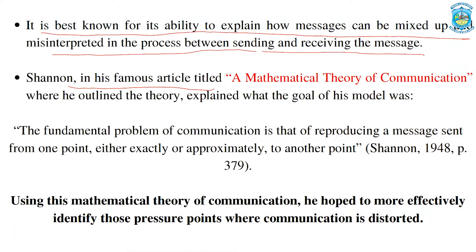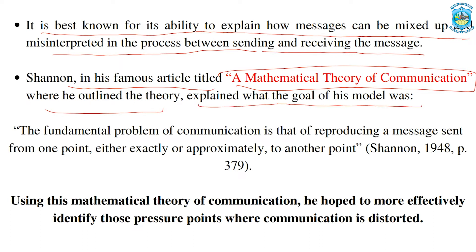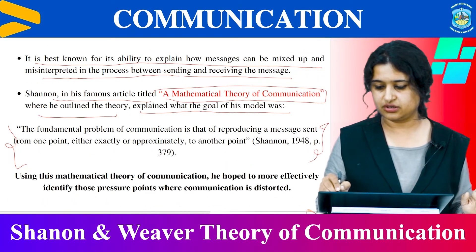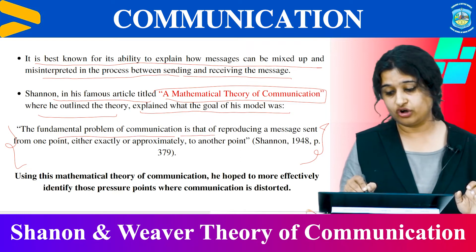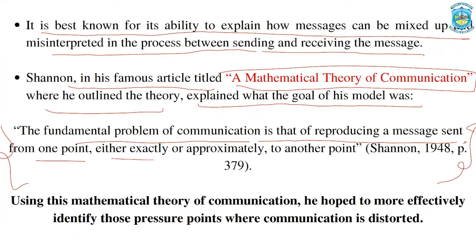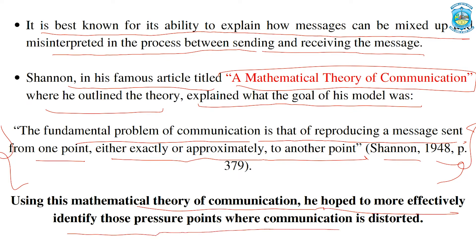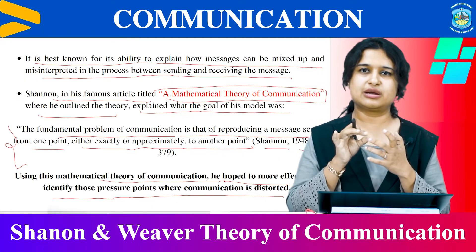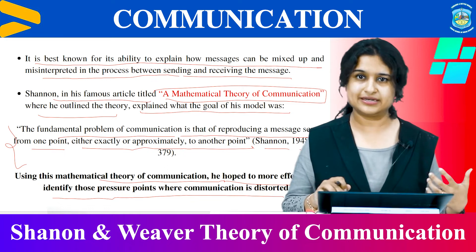Shannon, in his famous article called 'A Mathematical Theory of Communication,' outlined the theory and explained its goal. I want to quote these lines from the book: 'The fundamental problem of communication is that of reproducing a message sent from one point either exactly or approximately to another point' — Shannon, page 379. Using this mathematical theory, he hoped to more effectively identify those pressure points where communication is distorted.